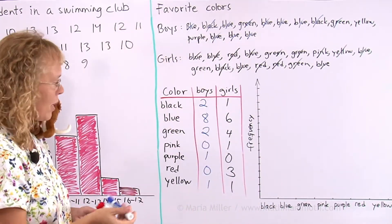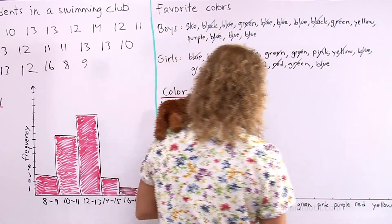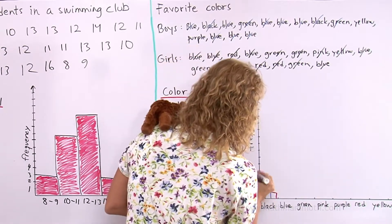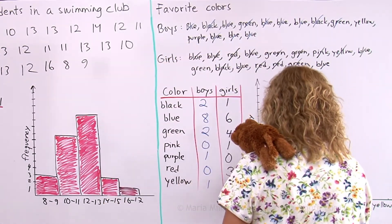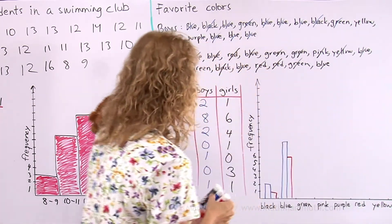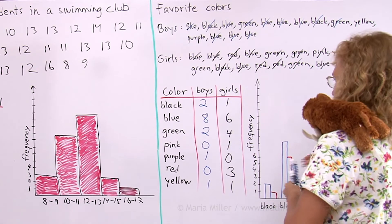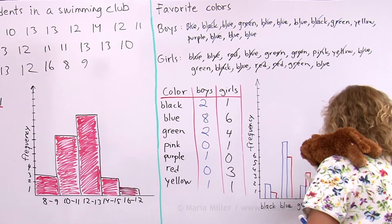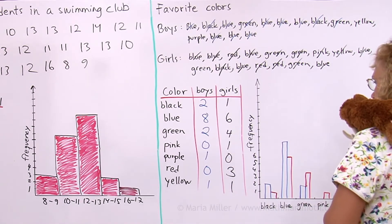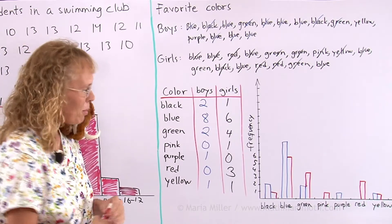Now we're ready to draw the bars themselves. For black, that's two and one, kind of like this. And then for girls, then for blue, it needs to go eight high for boys. Like that, girls is six high. And green, two and four for girls. Pink is zero and one, purple is one and zero, red is zero and three, and yellow is one and one. There, now the double bar graph is ready.